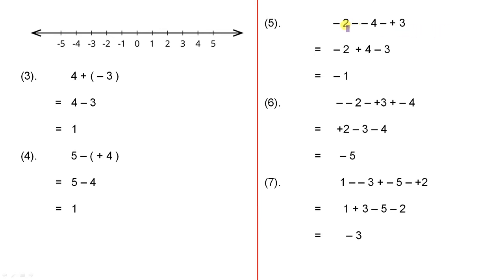Example 5, minus 2, minus minus 4, minus plus 3. Those two signs translate to a plus, those two signs translate to a minus. So minus 2, plus 4, minus 3.